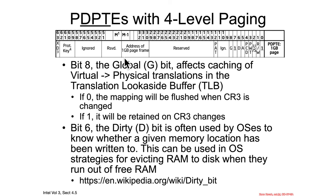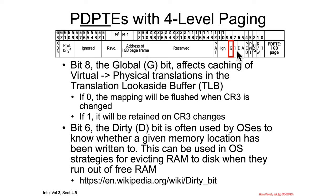Other bits of interest in the one gigabyte version are the global flag, which indicates whether this virtual-to-physical translation should be cached. The MMU is walking through this page table, and the G flag is used for TLB caching — keeping the translation of the particular linear address to the ultimate physical address of the one gigabyte page frame. If G is one, this translation will be cached. If G is zero, it'll still be cached but evicted every time CR3 is changed.